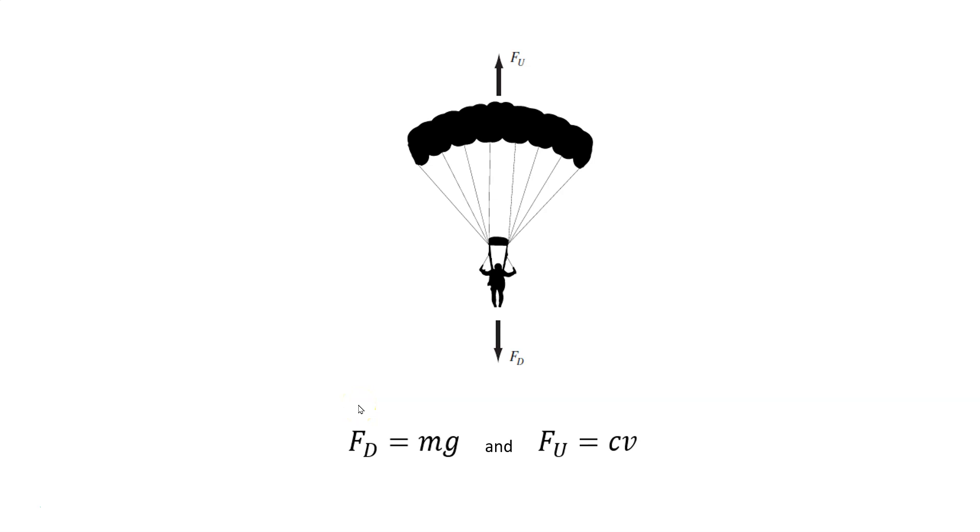First, I want to talk a bit about the problem. Here, we have a falling body, in this case, a parachutist, and we want to find the terminal velocity of this body. If we take this part as our system, we have two forces: F_D from gravitational force and F_U because of the air resistance. You know that F_D gravitational force is equal to m times g, and F_U is equal to c times v. Here, c is constant and v is the velocity.